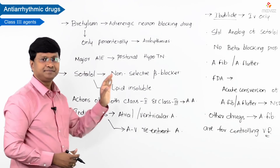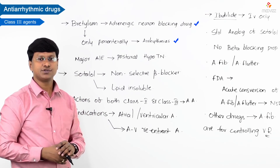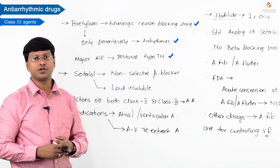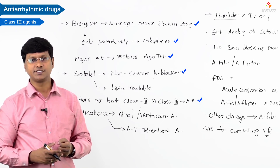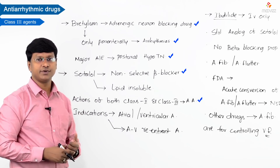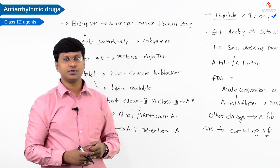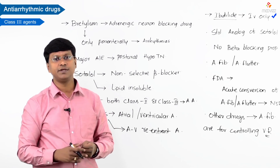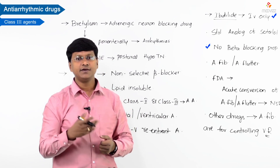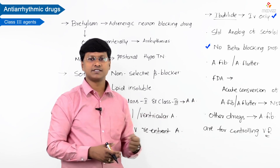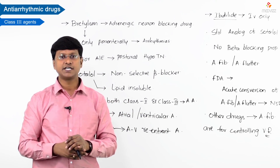In summary: Bretylium is an adrenergic neuron blocking drug used parenterally for arrhythmias, with postural hypotension as its major adverse effect. Sotalol is a non-selective lipid-insoluble beta blocker with class 2 and class 3 actions, indicated for atrial or ventricular tachyarrhythmias and AV re-entrant arrhythmias. Ibutilide is given intravenously only, is a structural analog of sotalol with no beta-blocking property, and is the only FDA-approved agent for acute conversion of atrial fibrillation to sinus rhythm, while other drugs are used for controlling ventricular rate.